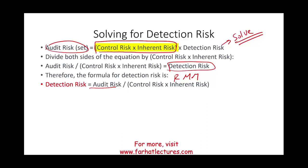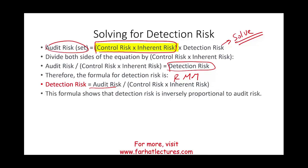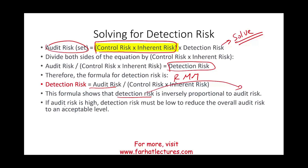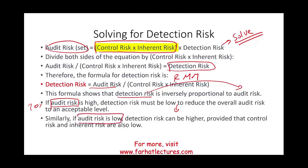What does this formula show us mathematically? There is an inverse relationship between detection risk and RMM. If audit risk is high — meaning we're willing to take more risk — detection risk must be low to reduce the overall audit risk to an acceptable level, so we have to do more work. If audit risk is low — say only 5% — detection risk must be higher, provided that control risk and inherent risk are also low.